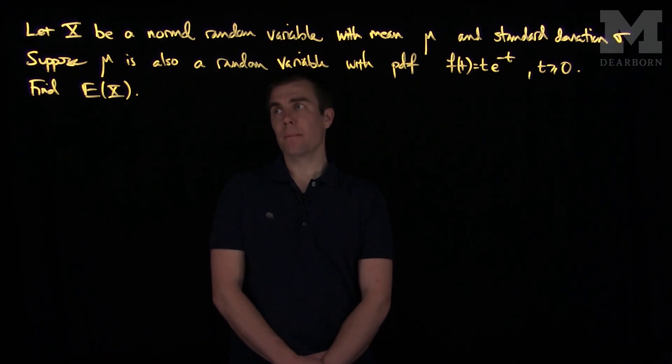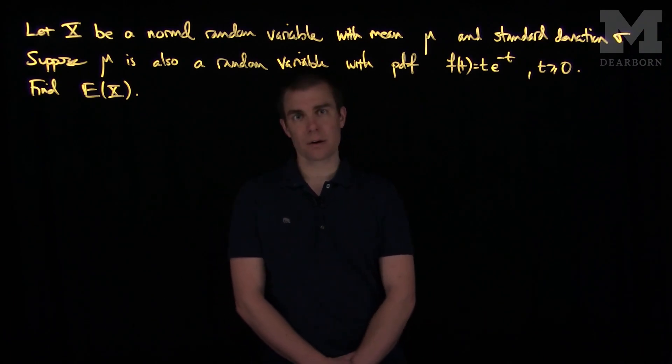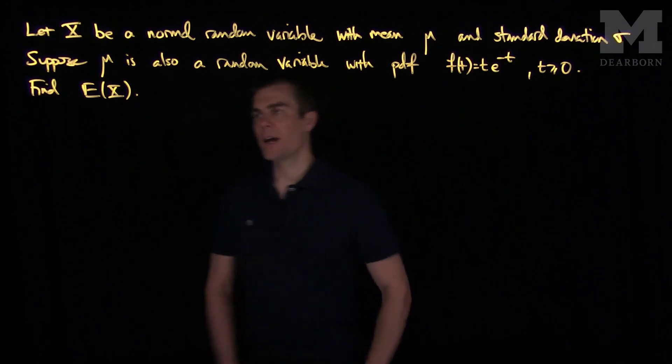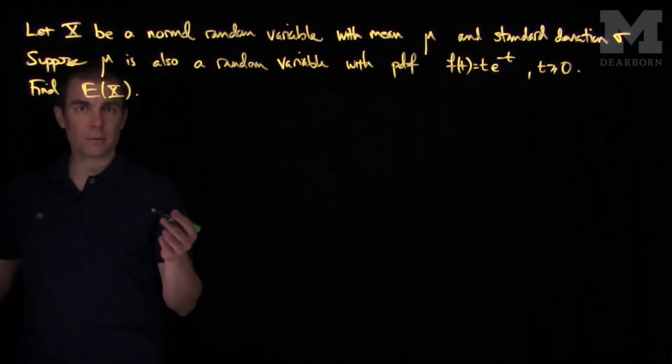We suppose also that the mean μ is a random variable whose pdf is f(t) = t·e^(-t) for t greater than zero. We would like to find the expected value of X. In this problem we will use the law of double expected value.